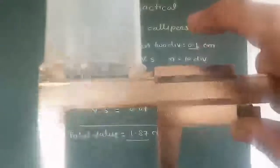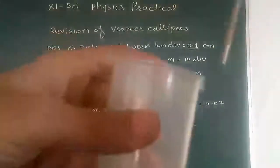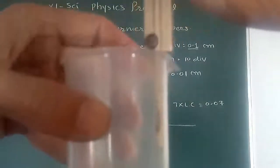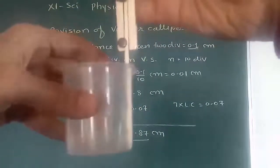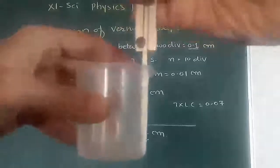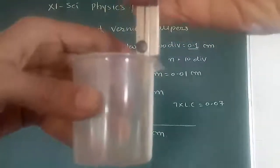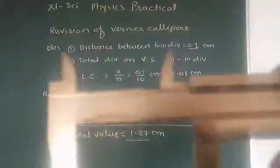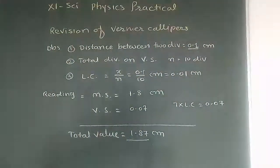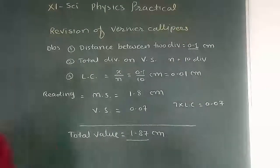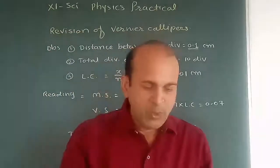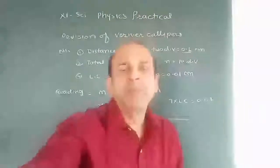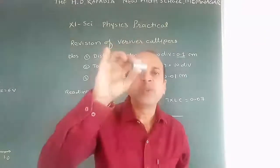In the same way, we can measure the internal diameter of this beaker. Also, we can measure the depth of this beaker using this Vernier strip. The length of this strip is equal to the depth of the beaker. In this way, we can find the dimension of this sphere, the dimension of this cuboid, and also the dimension of this hollow cylinder and beaker.